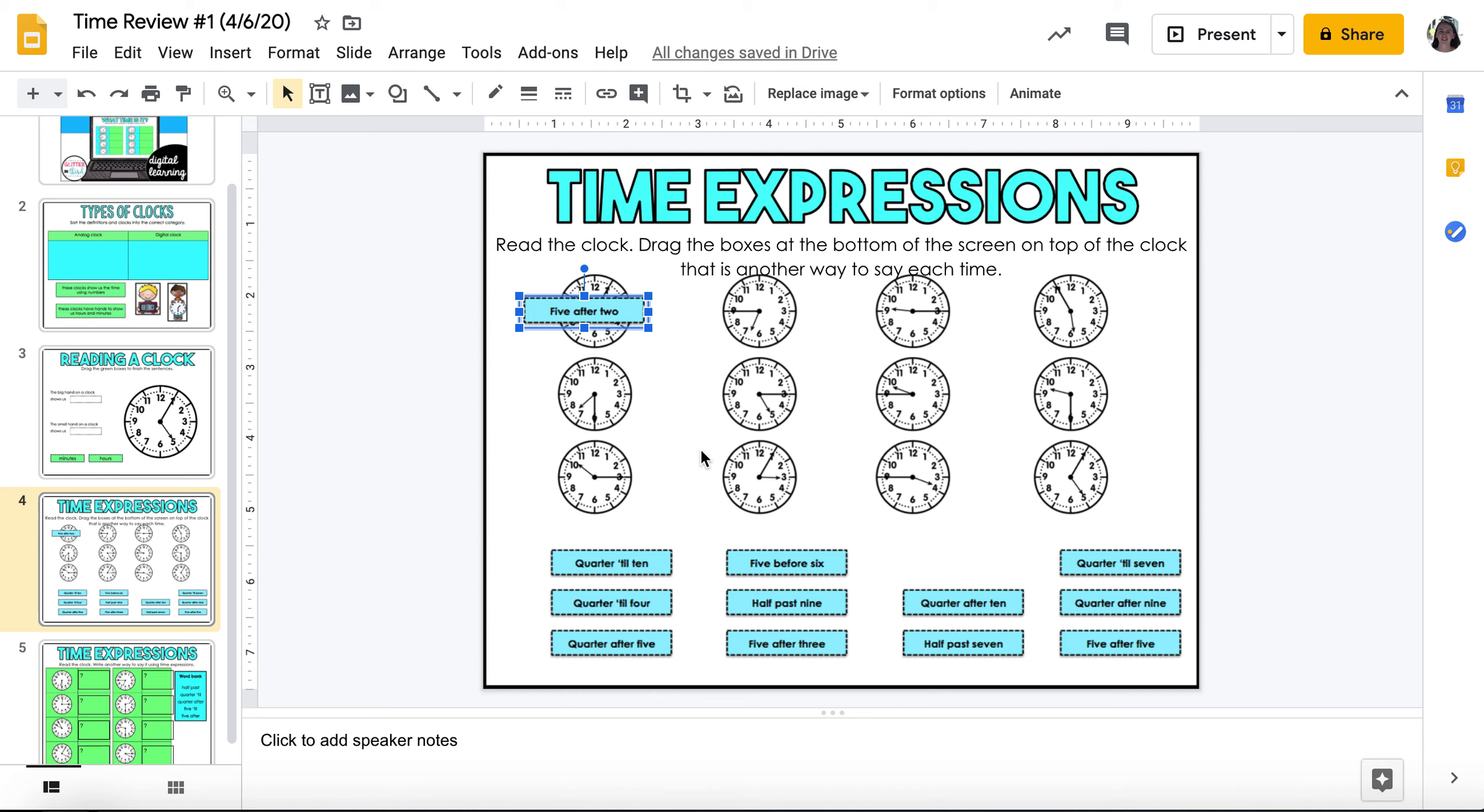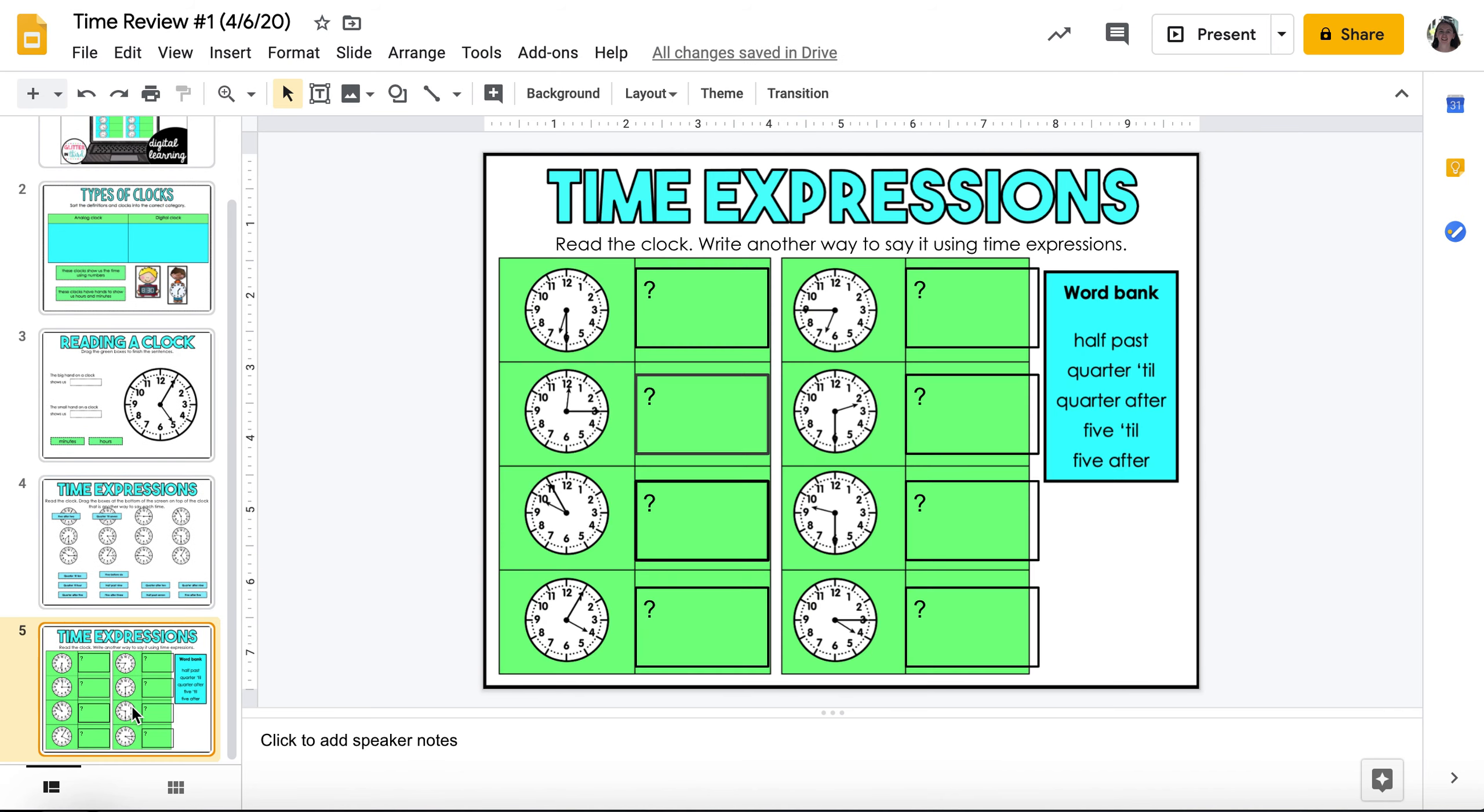Quarter to seven. So let's see if I can find quarter to seven. I could also say till seven. All right, it's a quarter to seven. So you're going to do that for all of these beautiful clocks. You're going to click and drag where it's supposed to go.